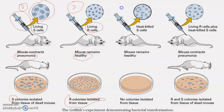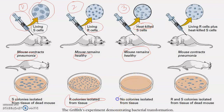In the third step, Frederick Griffith injected heat-killed S-type bacteria. Although S-type bacteria are normally pathogenic, these were heat-killed, so they were unable to cause pneumonia in the mouse, and the mouse remained healthy. Since the cells were heat-killed, they could not grow on nutrient media, so no colonies were isolated.